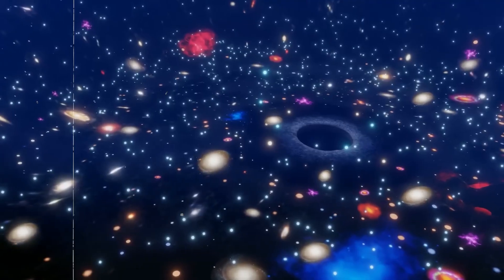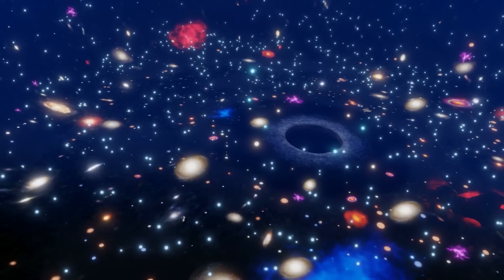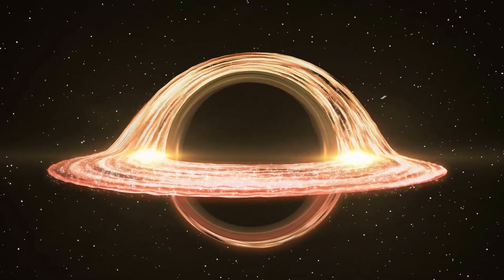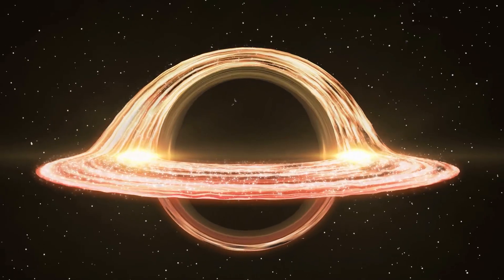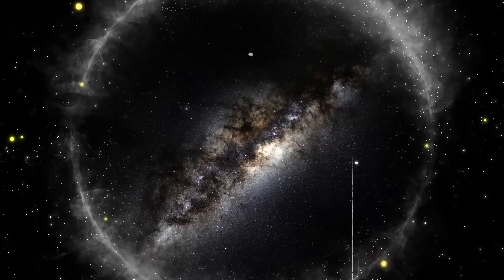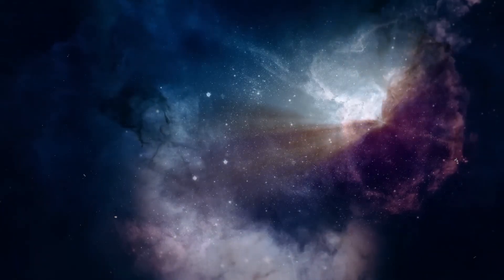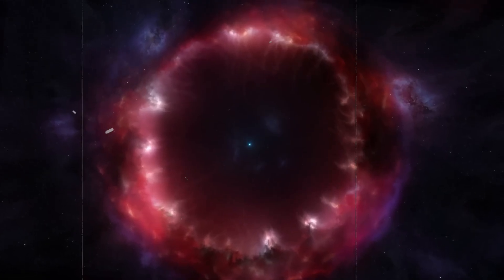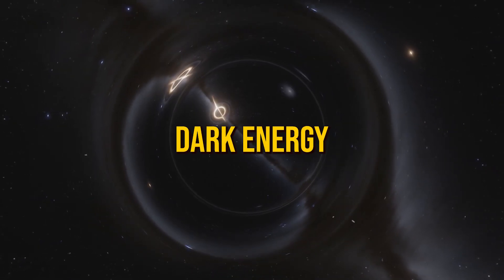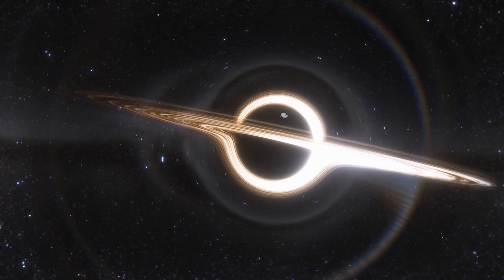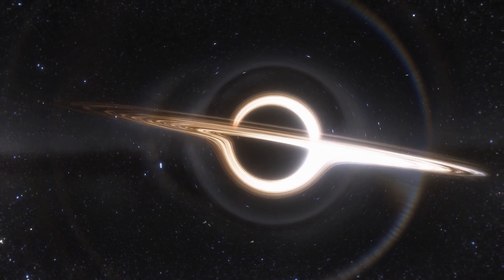Imagine standing at the edge of the universe, peering into the unknown. That's the event horizon. It's like a curtain that separates what we can see and what we can't. Beyond this line, the universe dances to its own tune, beyond our influence or observation. Because of something called dark energy, parts of the universe will forever be out of reach, forever beyond our grasp.